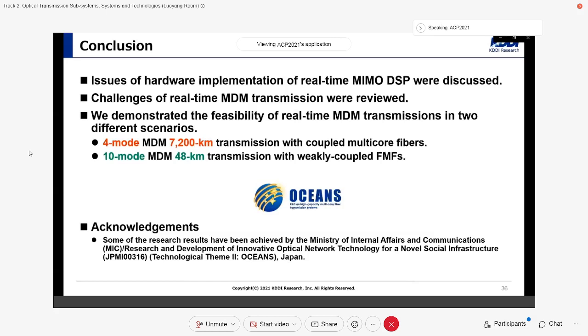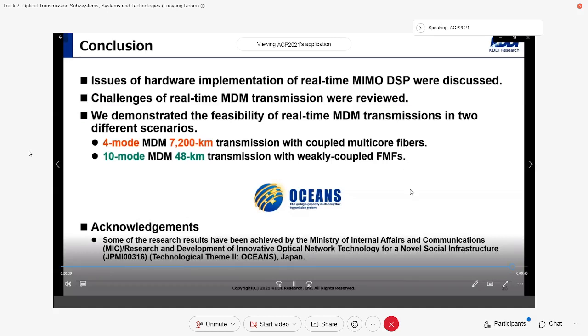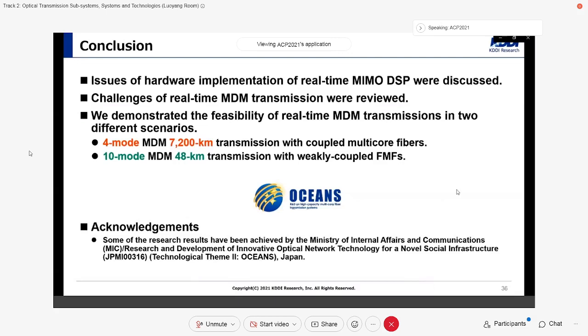Finally, I conclude my talk with a brief summary. Issues of hardware implementation of real-time MIMO DSP were discussed, and challenges of real-time MDM transmission were reviewed. We demonstrated the feasibility of real-time MDM transmissions in two different scenarios. 4-mode MDM, 7200 km transmission with coupled multi-core fibers. In this experiment, the small SDM characteristics of coupled multi-core fibers played an important role to suppress MIMO complexity. And 10-mode MDM, 48-km transmission with weakly coupled few-mode fibers. In this experiment, the weak coupling characteristics of spatially designed 10-mode fibers and mode multiplexer played an important role to suppress MIMO complexity. Thanks for your kind attention.